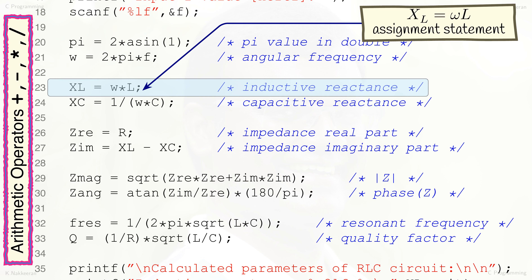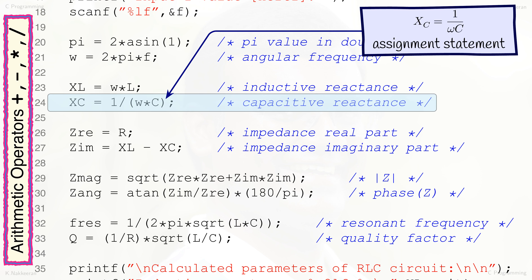In the line 23 assignment statement, inductive reactance XL = ωL is calculated as xl = w * l. Values for w and l are available, and the double result is assigned to xl. In the line 24 assignment statement, capacitive reactance XC = 1/(ωC) is calculated as xc = 1 / (w * c). Note the use of parentheses to ensure the expression is computed correctly according to BODMAS rules. Values for w and c are available, and the double result is assigned to xc.